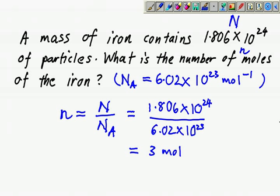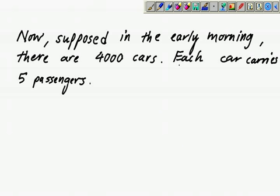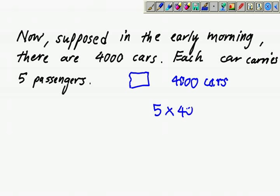That's like 3 dozens of chemistry dozens. Now we go one step further. Suppose in the early morning traffic jam there are 4000 cars, each car carries 5 passengers. If I ask you how many cars, that would be 4000 cars. If I ask more specific questions like how many people, then you would use 5 times 4000.